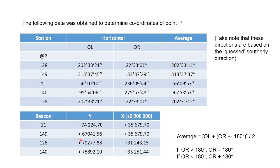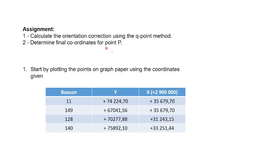You are also given your beacon coordinates. These are fixed coordinates — determined by a surveyor or taken from an official map. These are the values we're going to use for this example. You have to first calculate the orientation correction using the Q-point method, and then determine and find coordinates for point P. You start with these points.